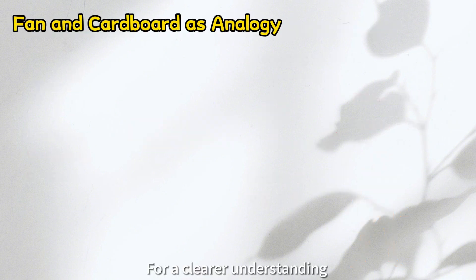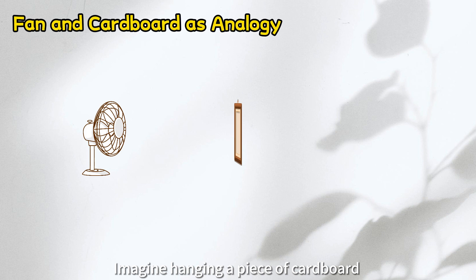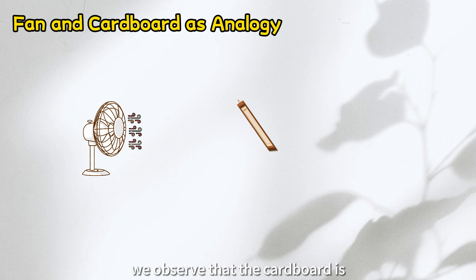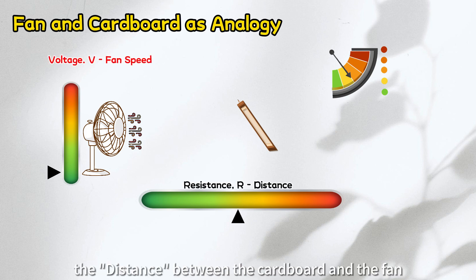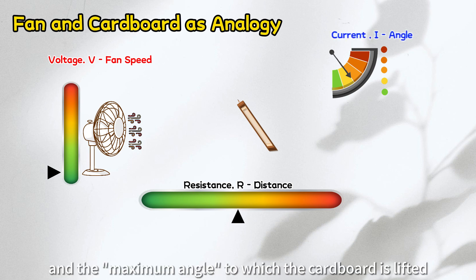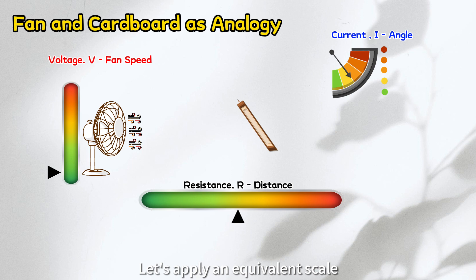For a clearer understanding, let's use a simple analogy. Imagine hanging a piece of cardboard at a certain distance from a standing fan. When we turn on the fan, we observe that the cardboard is gently lifted at a specific angle from its original position. In this analogy, we use the fan speed to represent voltage, the distance between the cardboard and the fan as resistance, and the maximum angle to which the cardboard is lifted as current. Let's apply an equivalent scale.